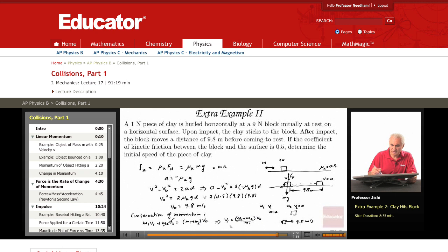M1 is 1 times 9.8. I can multiply by g up and down. So multiply by g up, multiply by g down. M1 g is 1 newton. M2 g is 9 newton. So that's 10 newton. M1 g is 1 newton. V0 is 9.8. So I end up with 98 meters per second. So the initial velocity of the piece of clay is 98 meters per second.